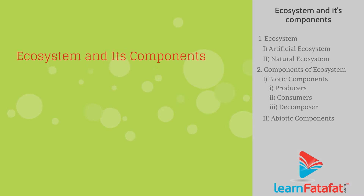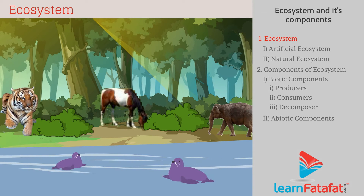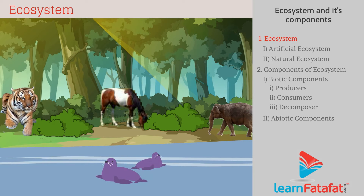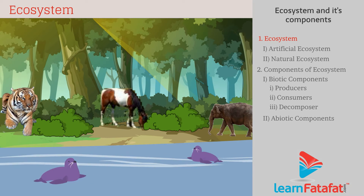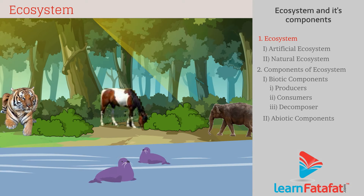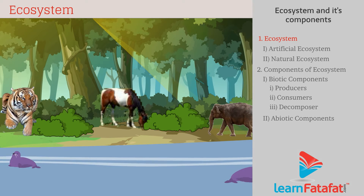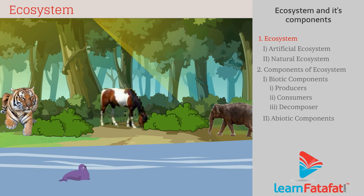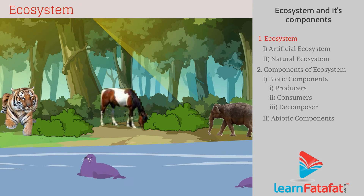Ecosystem and its components. The community in which living and non-living things interact and maintain balance in nature is called an ecosystem. For example, in a forest, there are various plants and animals. They interact with each other and their activities are dependent on non-living parameters such as temperature and water. Hence, a forest is an ecosystem.